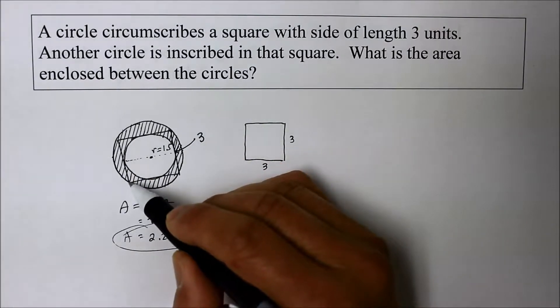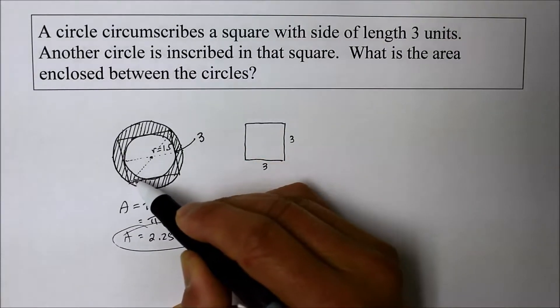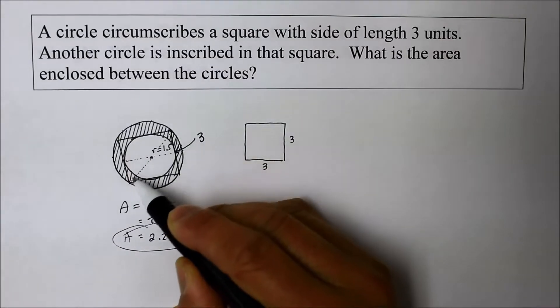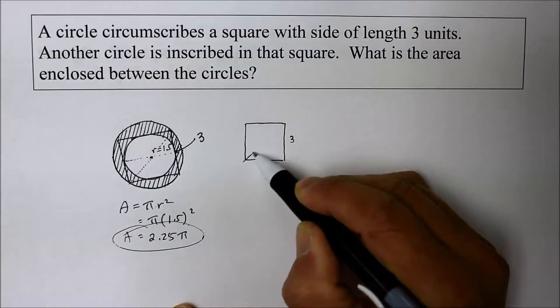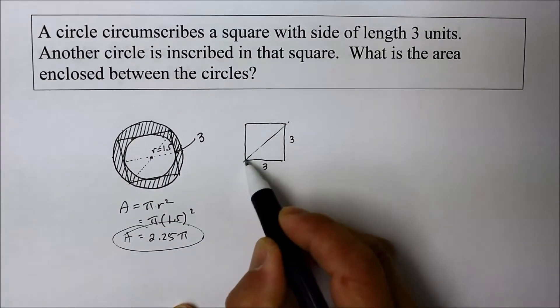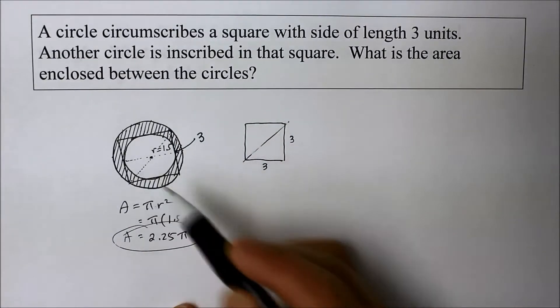And if you look very carefully, the radius can be viewed this way. See that? The radius of the big circle is the same as the diagonal of that square. This way. That becomes the diameter. So how do you find the diameter or the diagonal of the square, which becomes eventually the diameter of the circle?